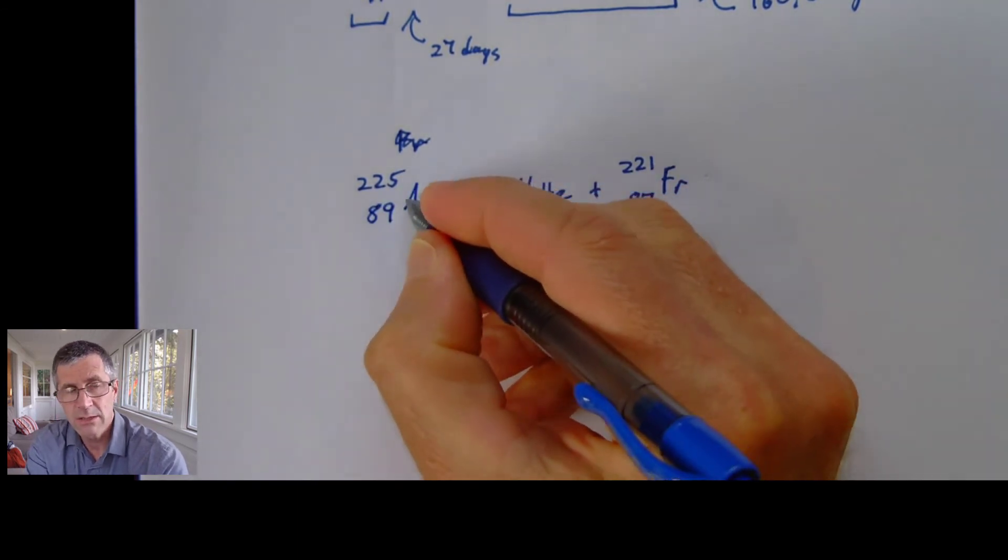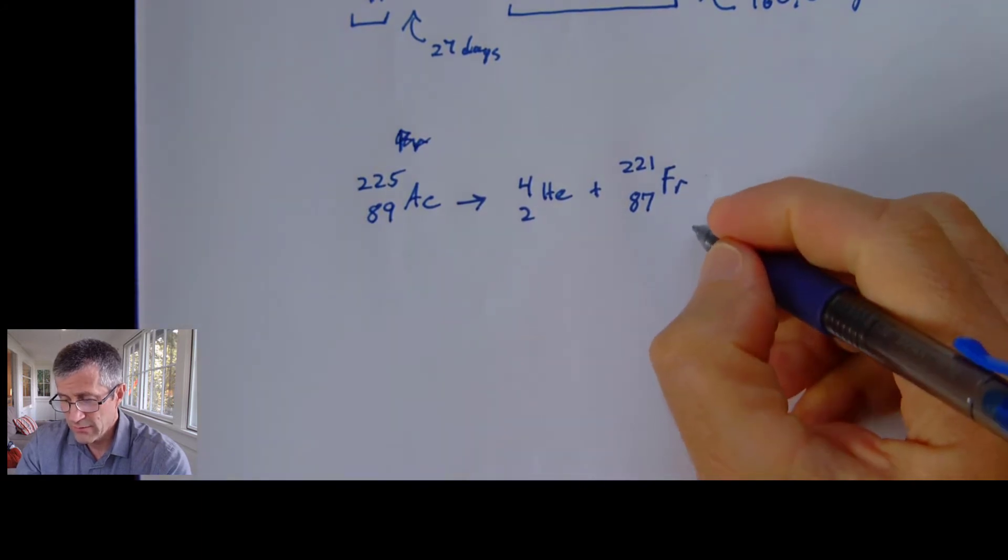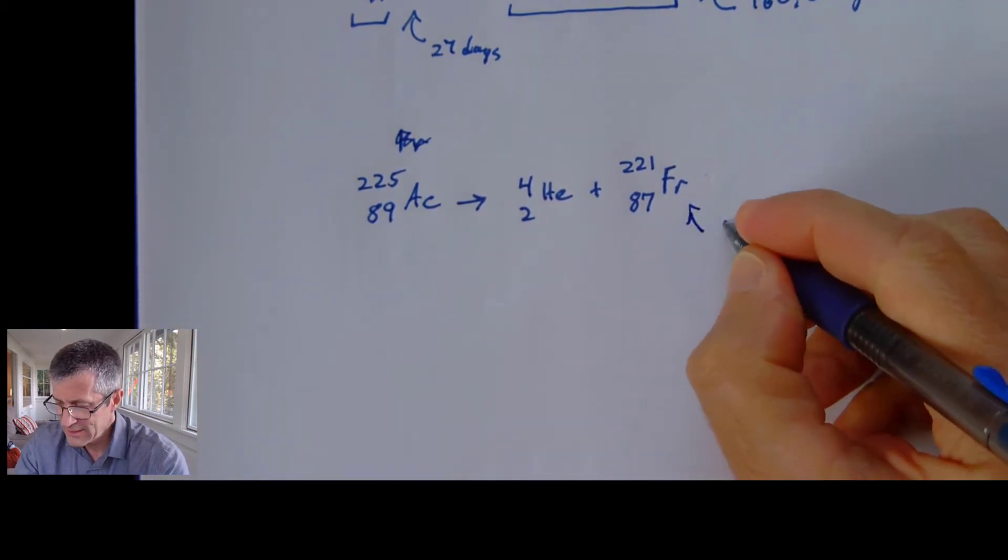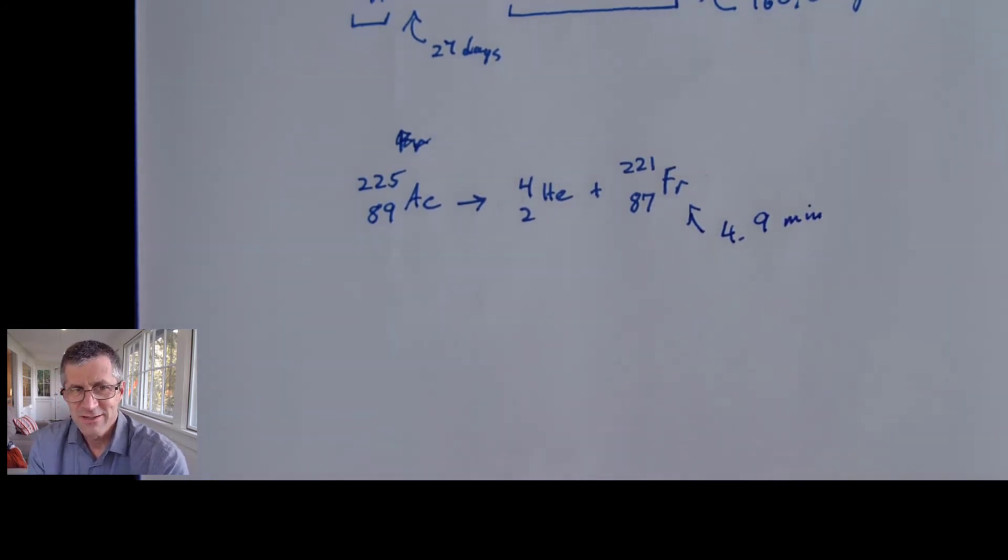And I'll look up on the periodic table and discover that this is actinium. And this is the decay of actinium. So it goes through this decay where it shoots out an alpha particle and produces francium. The interesting thing, this has a very short half-life. This is 4.9 minutes.